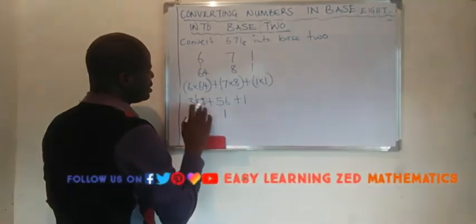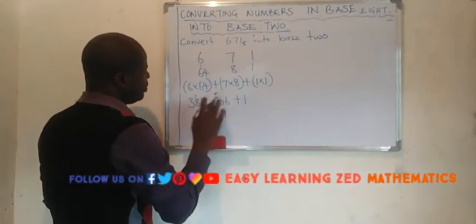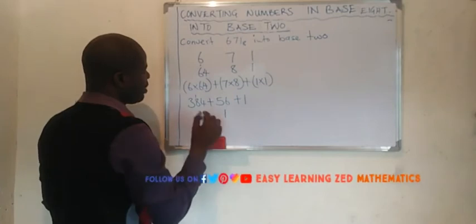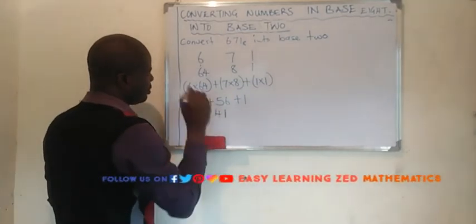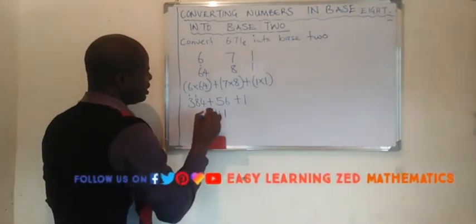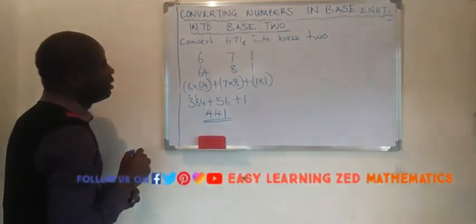Then we say 5 plus 8, 13 plus 1, 14. So we'll write 4 and carry 1. We'll put 1 here. Then 1 plus 3, that is 4. It will give us 441.